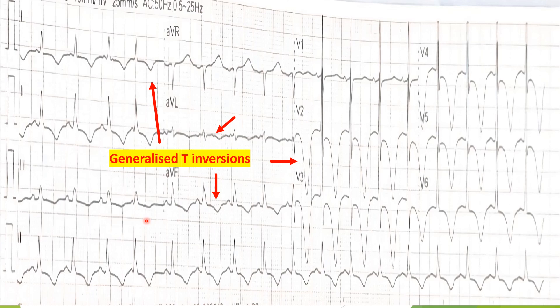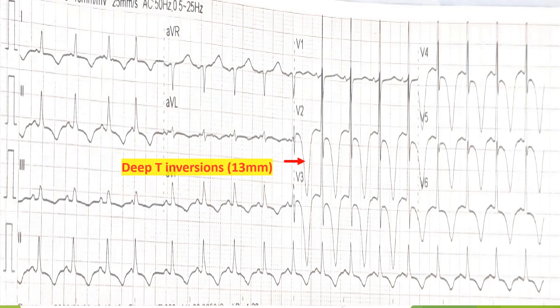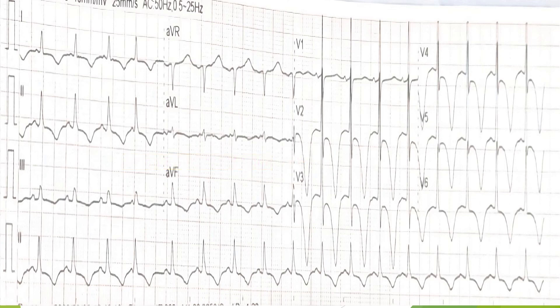So what can be the reason for that? Before proceeding further, let's find some other pathologies in this ECG. These T wave inversions are pretty deep — you can see they are 13 mm, which is not usually seen. Along with the inversions, we can see very obvious ST depressions, which are clearly visible in these leads.